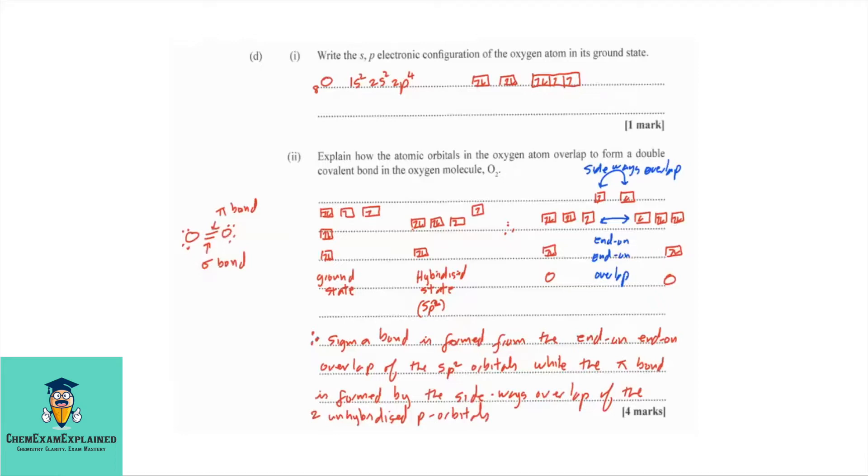Part D, 1. Write the sp electronic configuration of the oxygen atom in its ground state. For oxygen, with 8 electrons, you're looking at 1s2, 2s2, 2p4. This is the box notation, which shows you how the electrons are arranged in the orbitals.